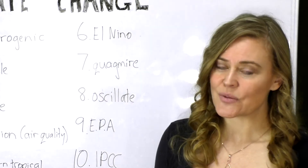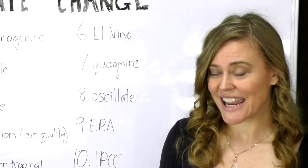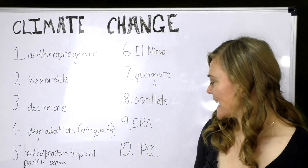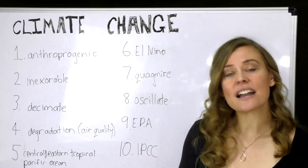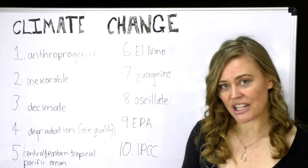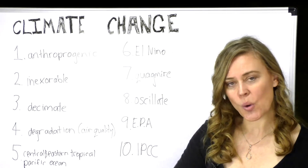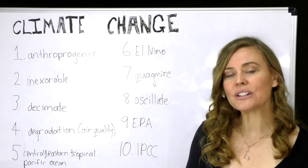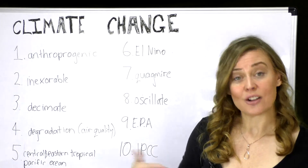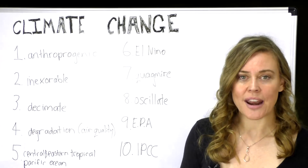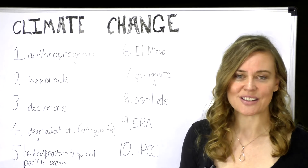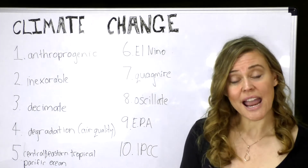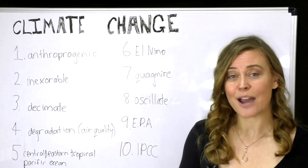Number nine: EPA stands for the Environmental Protection Agency. Number ten is the IPCC — the Intergovernmental Panel on Climate Change — representing all the governments around the world. These are really important acronyms when talking about the solutions to climate change.